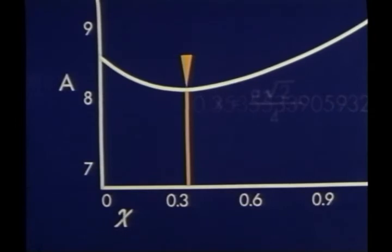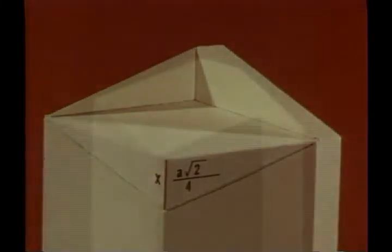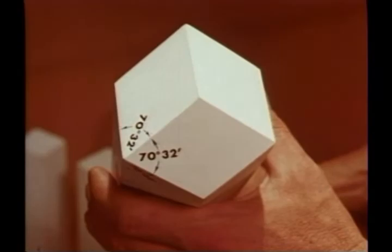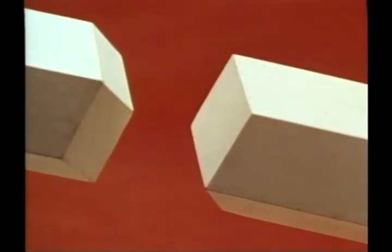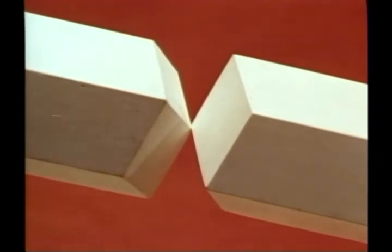With complete generality, this occurs when x equals a, the length of a side, times the square root of two divided by four. The cell then has the shape that bees use, with the angles of the rhombi that Miraldi gave. Someone may wonder whether this is so economical — isn't it necessary to waste wax to build two-pointed ends? Bees have the answer to this: they build the cells so that the bottoms are offset.